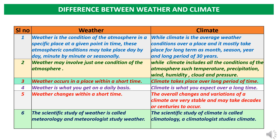The difference between weather and climate: Weather is the condition representing atmospheric changes on a day-to-day basis, minute by minute or seasonally, representing changes over a shorter period. Climate is the average weather conditions over a place and mostly takes place over a longer period like a month, season, year, or a long period of 30 years. In the case of weather, it may involve just one condition of the atmosphere, like wind, temperature, or pressure, while climate includes all conditions of the atmosphere such as temperature, precipitation, wind, humidity, cloud, and pressure.